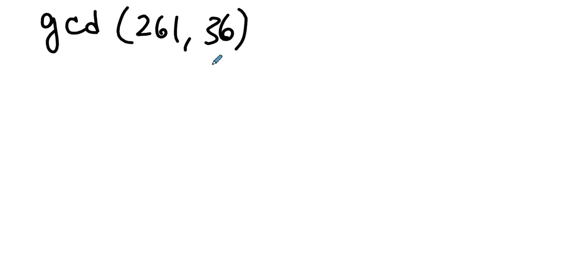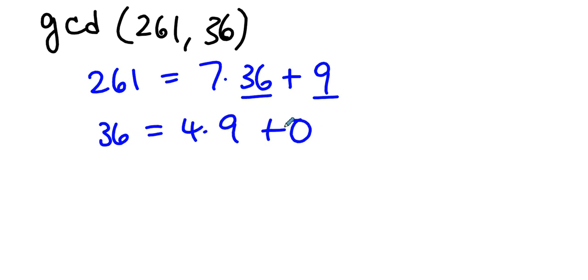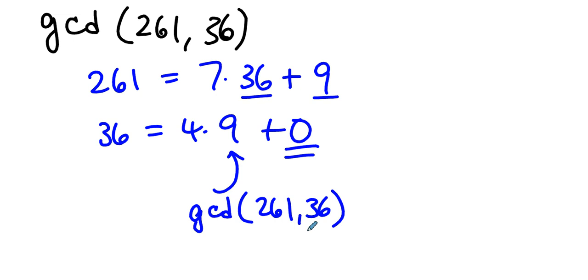How does it work? If I'm looking for the greatest common divisor of 261 and 36, I recognize that 261 equals 7 times 36 plus 9. That 36 is the new b and 9 is the new r. Then 36 equals 4 times 9 with no remainder. Once we have no remainder, 9 is the GCD of 261 and 36. This process lets us find greatest common divisors without using factor trees.